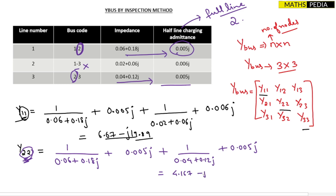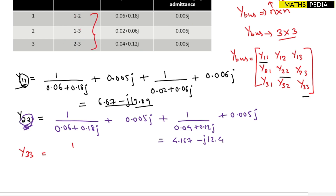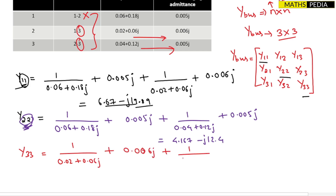For y33, the last diagonal element, find rows containing node 3: rows 1 to 3 and 2 to 3. Add all admittances: 1/(0.02 + j0.06) + 0.006j + 1/(0.04 + j0.12) + 0.005j. The answer for y33 is 7.5 − j22.23. That completes all the diagonal elements.